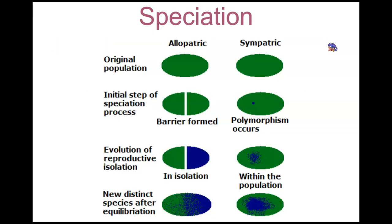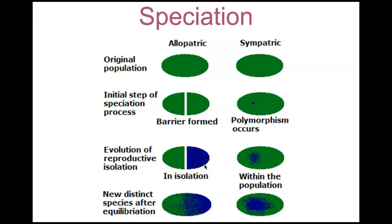Here's an example of the two types of speciation. We have the original population in green, then the initial steps of the speciation process — a barrier is formed, ultimately leading to evolution of reproductive isolation. We now have speciation taking place, and two new distinct species have reached equilibrium, meaning these two different populations can no longer interbreed.